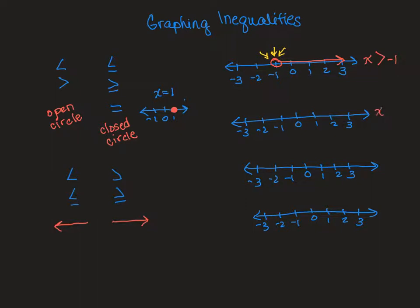Now let's look at x is greater than or equal to negative 1 — how does that change it? Well, it can equal negative 1, so now I'm closing that circle in. It can equal negative 1, or it can be anything greater than negative 1. My arrow is going in the direction the symbol points. The difference: in the first one, the circle is open; in the second one, the circle is closed.